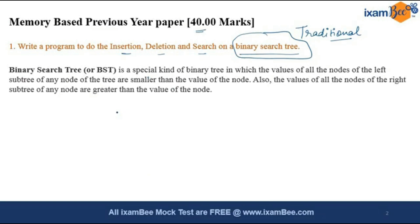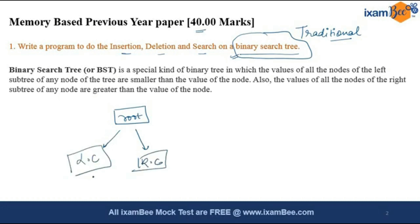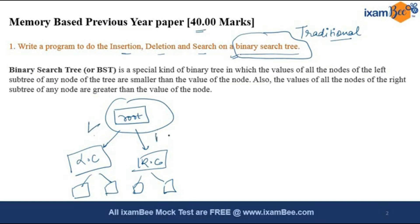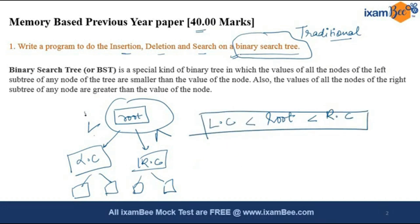The special feature of the binary search tree is that in a tree you have a root node and then you have two children — a left child and a right child. At every particular node you will have its left and its right. In a binary search tree, the root node value is greater than the left child and less than the right child. This rule is followed at every level throughout the tree.